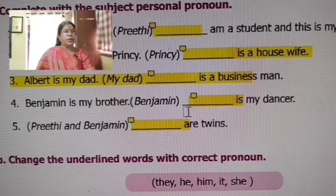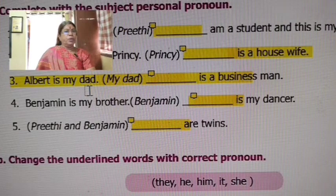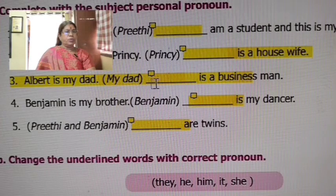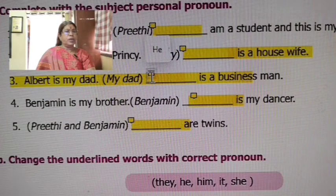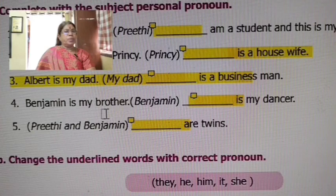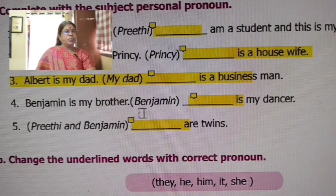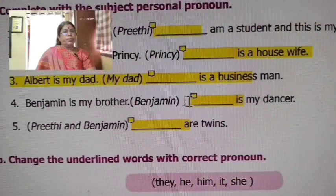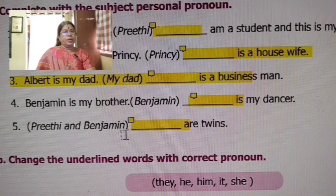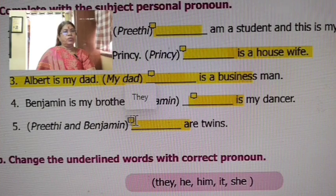Then: Albert is my dad. He is a businessman — the answer is 'he.' Benjamin is my brother — he is my dancer. Then Preethi and Benjamin together are two people, a plural form, so we use 'they' — 'They are twins.'